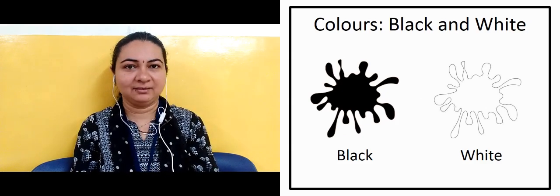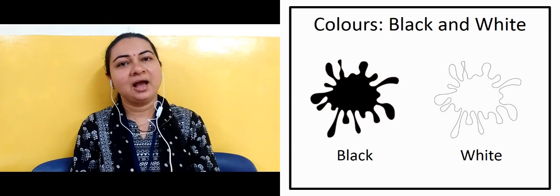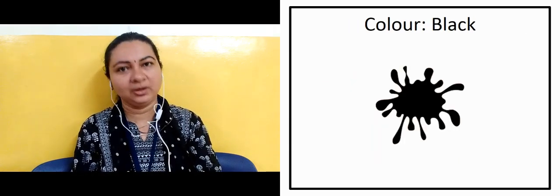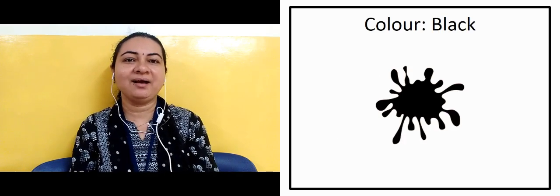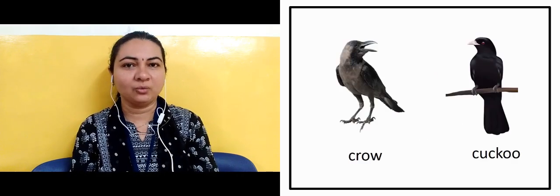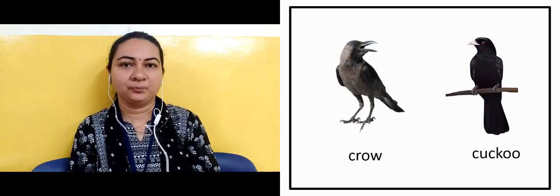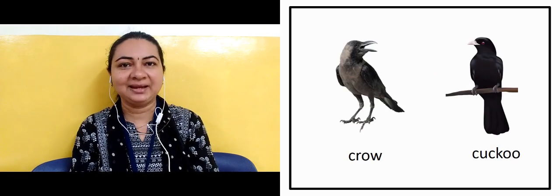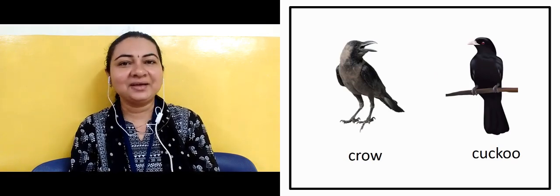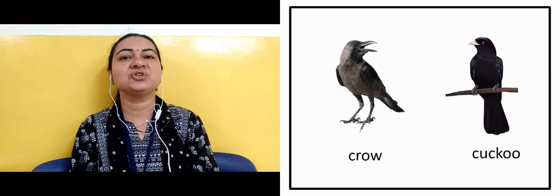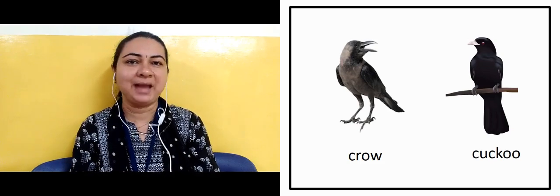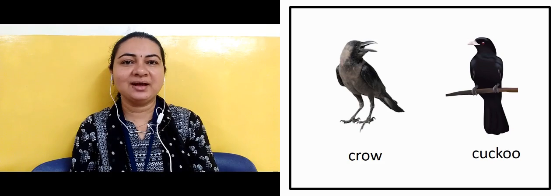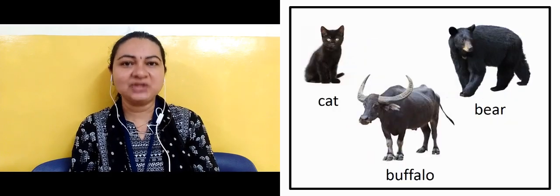The next slide is showing us color black. The next slide is showing us a crow — word crow — its color it is black in color. Another one is kuku and its color it is black.